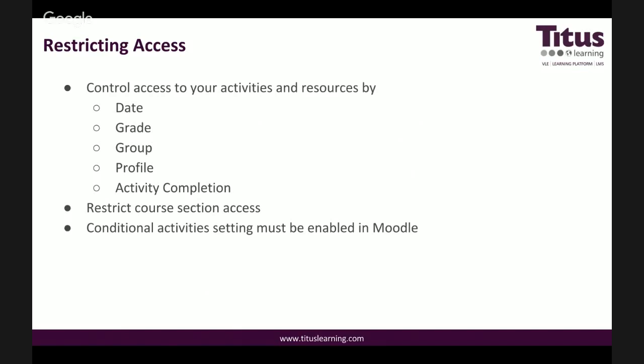The first thing is restricting access, or what used to be known as conditional activities. It basically allows teachers to control access to their activities and resources, and access can be controlled by date, by grade, by group, profile, and activity completion. We can also restrict access to an entire course section, which is a fairly new feature. Your Moodle administrator must enable the conditional activities setting in Moodle in order for teachers to be able to use these features.